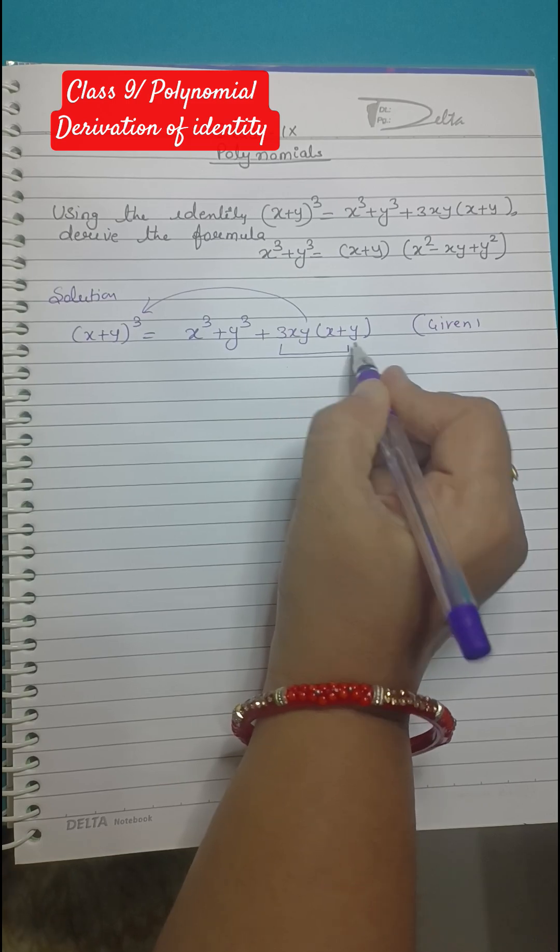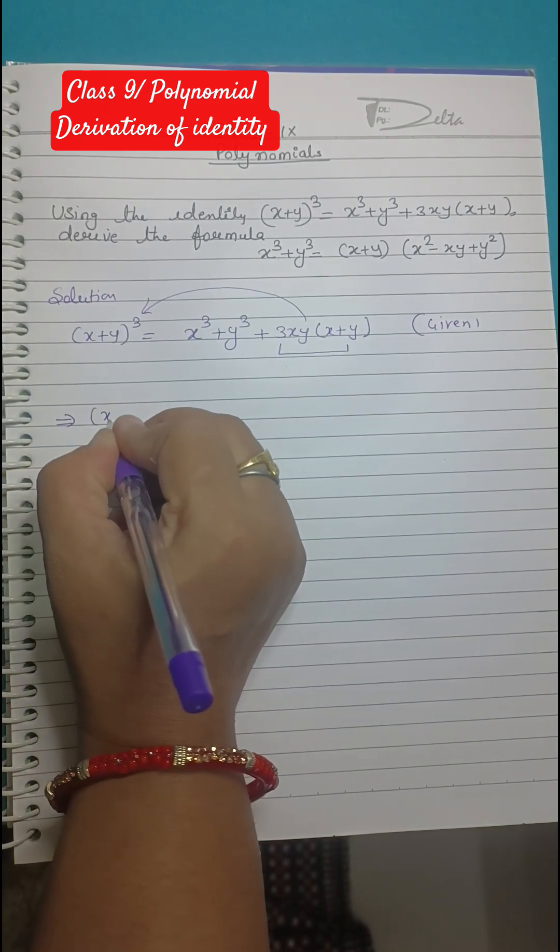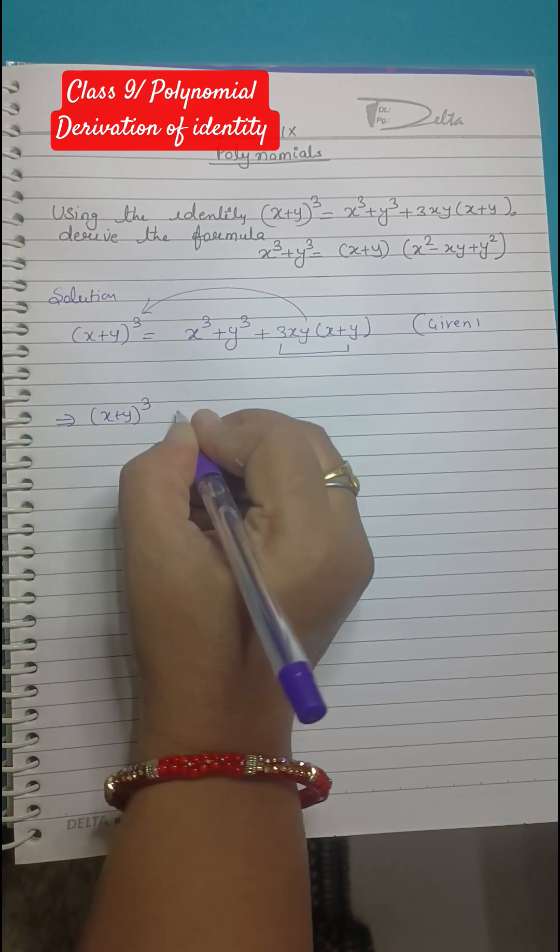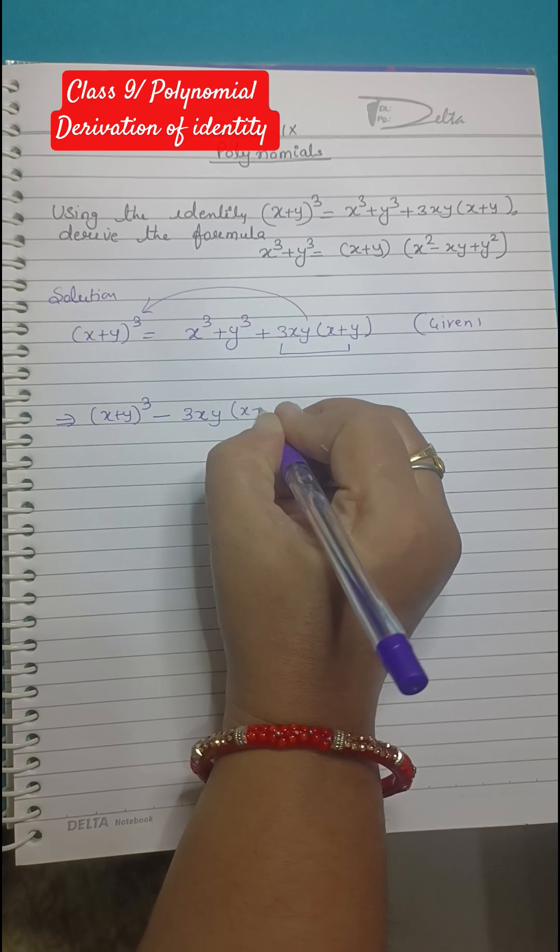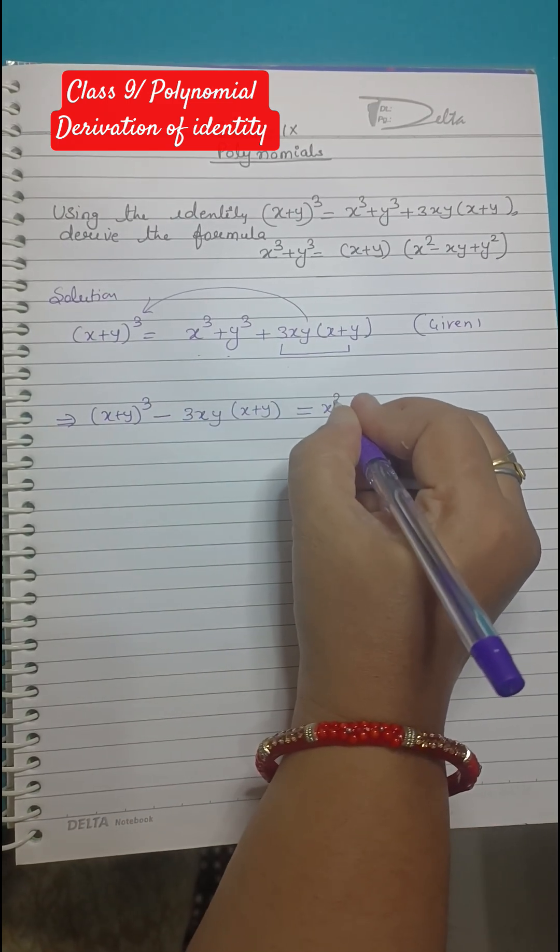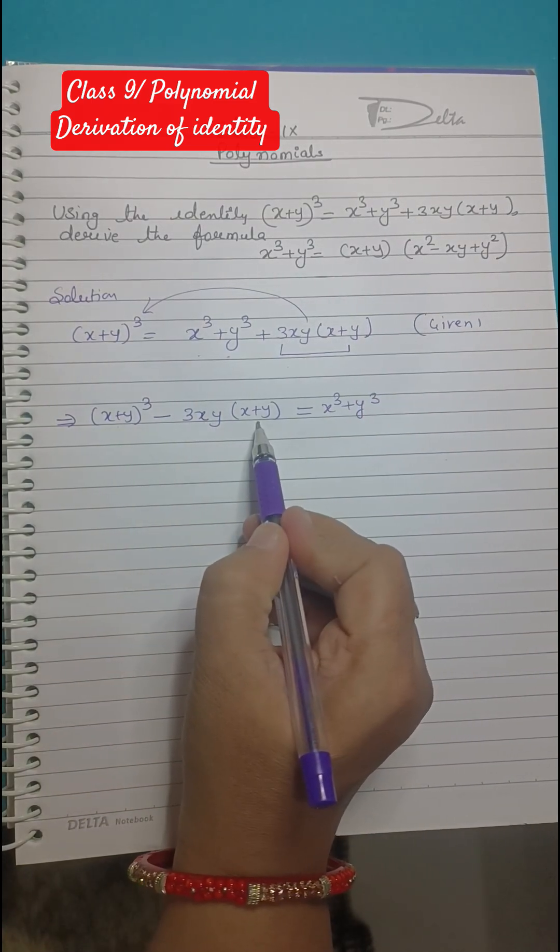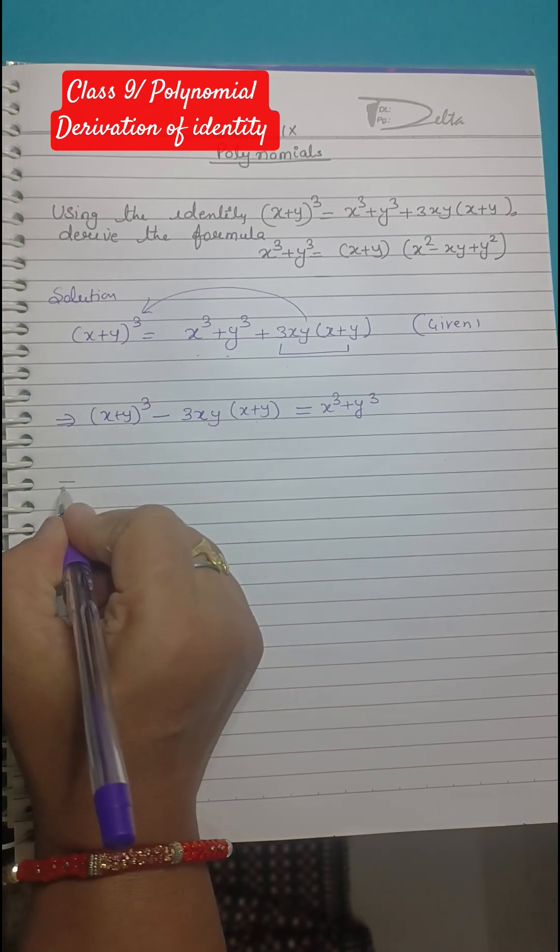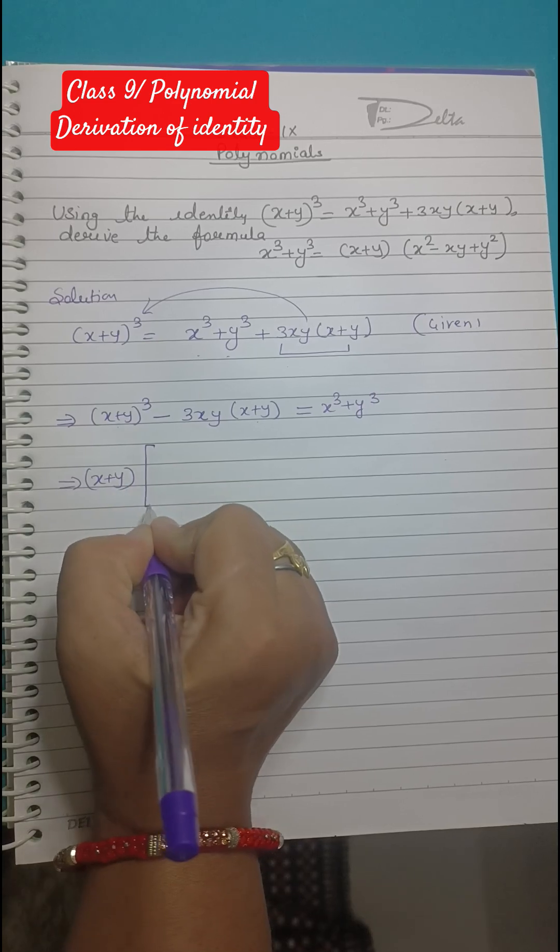So this complete term bring it on the left hand side. What it is going to come? (x+y)³ - 3xy(x+y), and what is left on the right hand side? Only x³ + y³. Now in these two, what is there common? It is x+y.